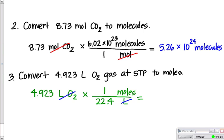And if you do the math, now you're dividing. 4.923 divided by 22.4 is going to give us, with 4 sig digs this time, 0.2198 moles.